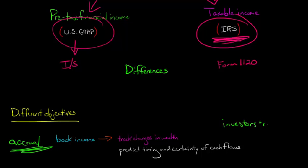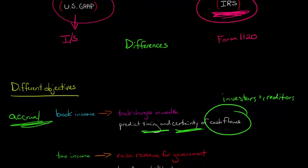And they're going to be trying to predict the future. They're trying to make predictions about the timing and the certainty of the firm's cash flows. So that's the objective of book income, is so that investors and creditors can use the financial statements to see what is going to happen with this firm in the future.